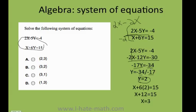So I do x plus 6 times 2 equals 15. Six times 2 is 12. I pass the 12 to the other side and finally I get x equals 3. My answer is 3 comma 2.